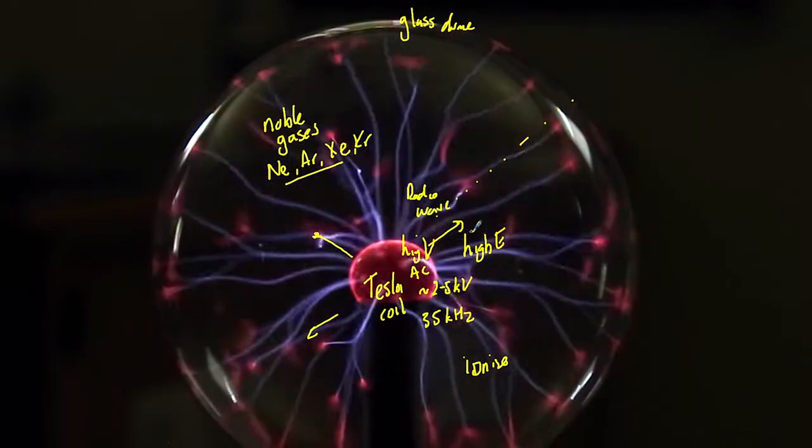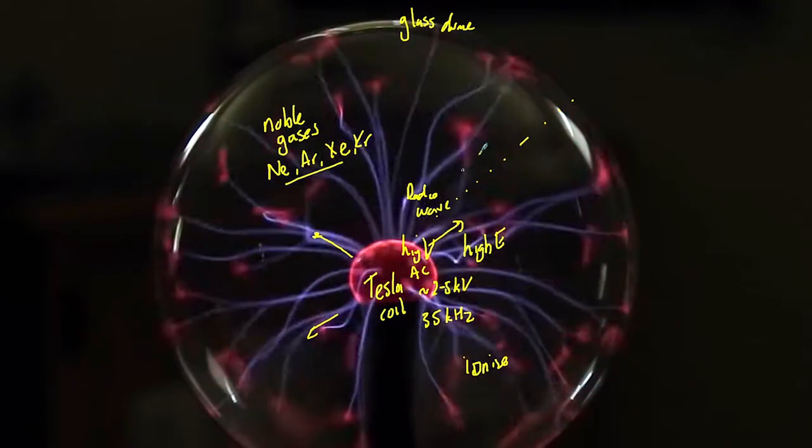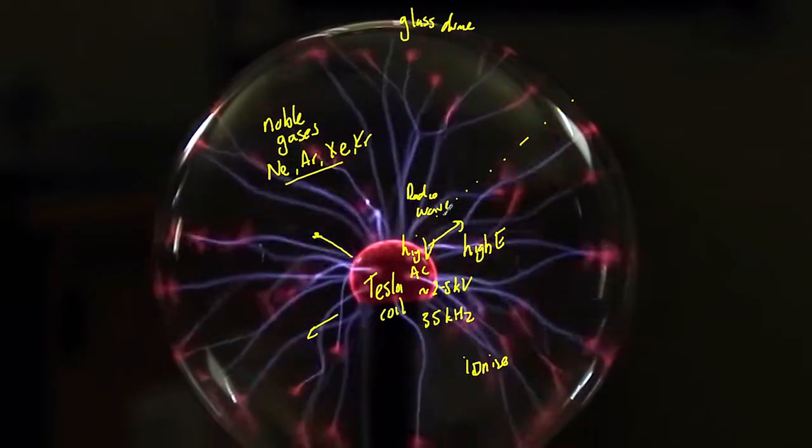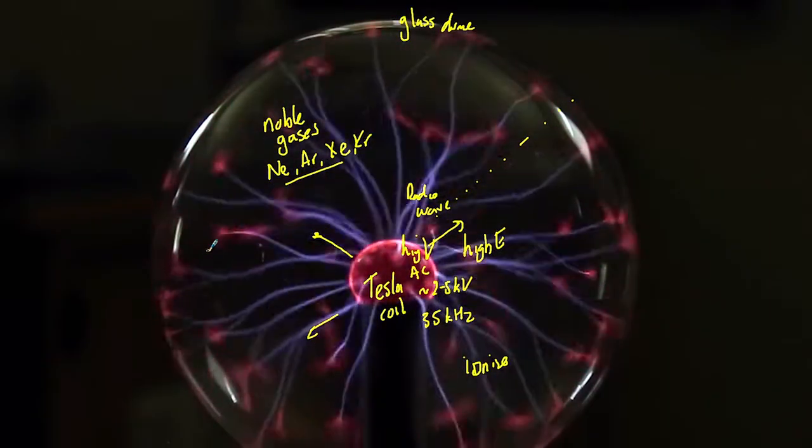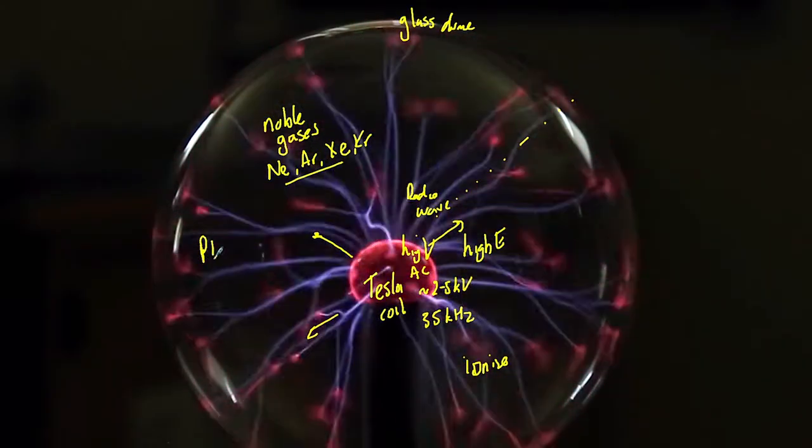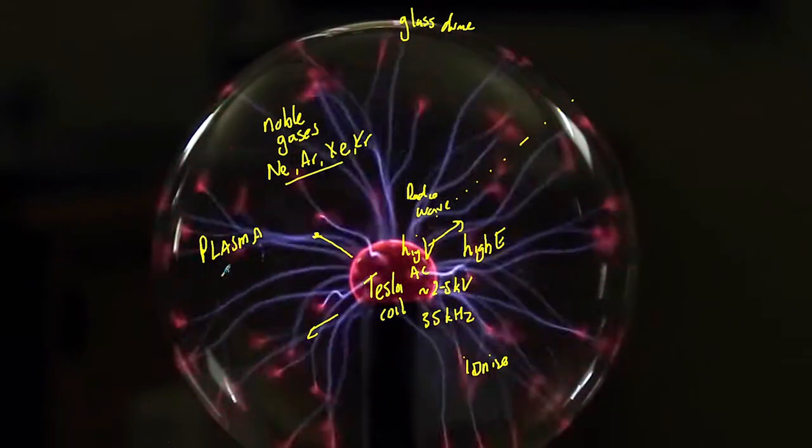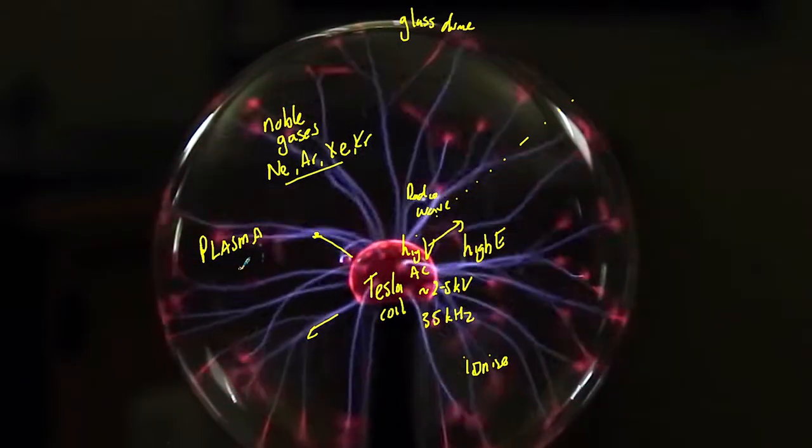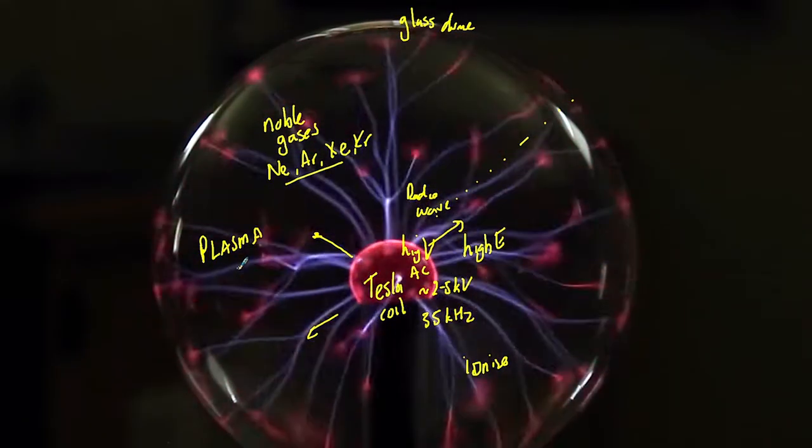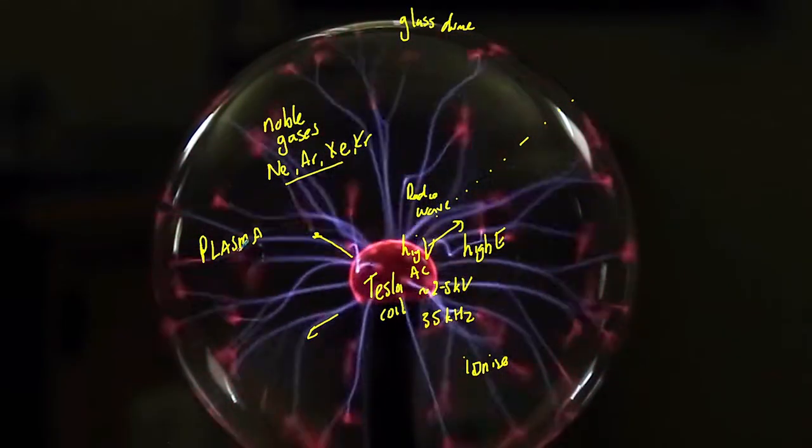Now that means the atoms in here are not in their neutral state. They're separated into their positive nuclei and their negative charges as they're being ripped off. Now that in essence refers to the fourth state of matter and that is plasma. Plasma is in essence a gas that has received so much energy, a fair amount of the atoms lose their electrons. And as they lose their electrons, we now have a sea of charged particles.